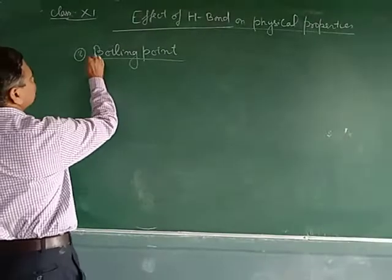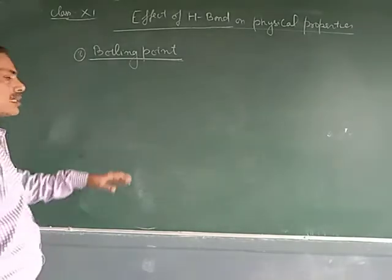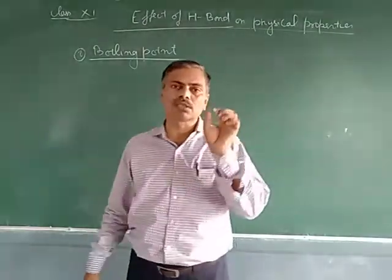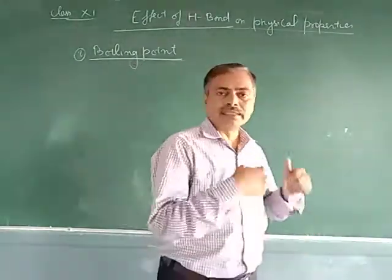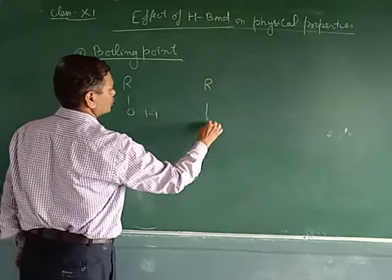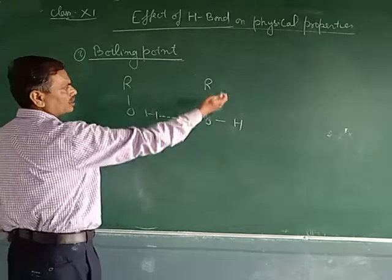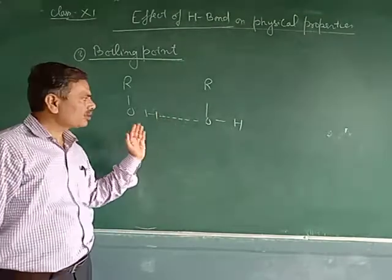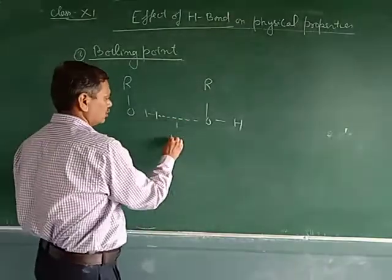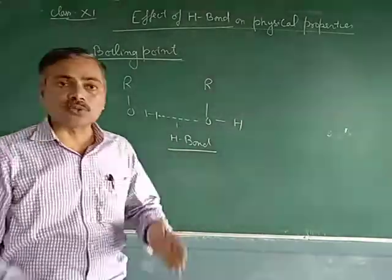The second physical property is boiling point — the boiling point of liquids and the melting point of solids. Due to the presence of intermolecular hydrogen bonding, the boiling point increases. For example, in an alcohol, there is intermolecular hydrogen bonding between the molecules of alcohol, and due to this, the boiling point of alcohols is high.